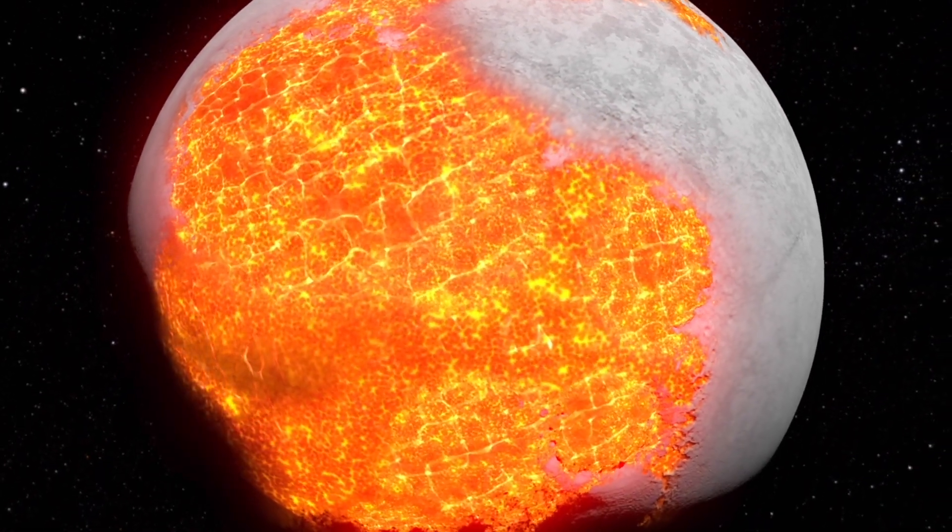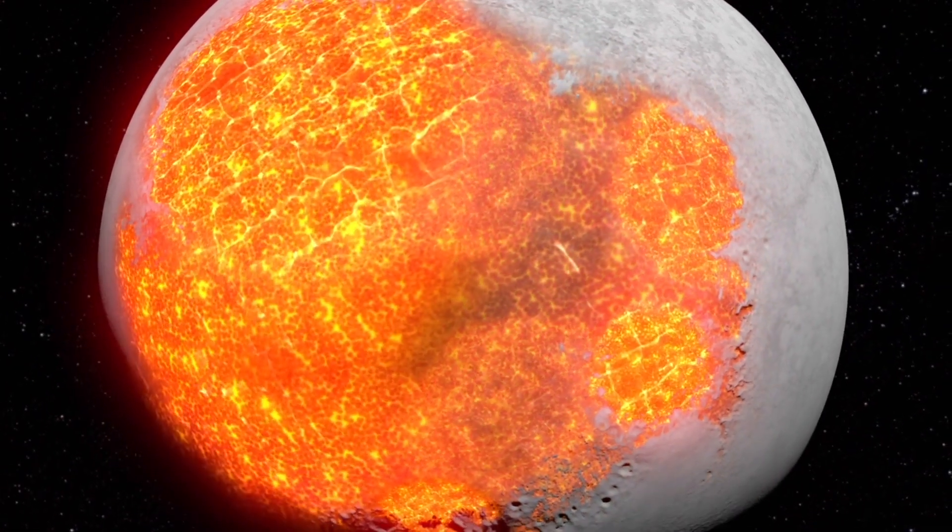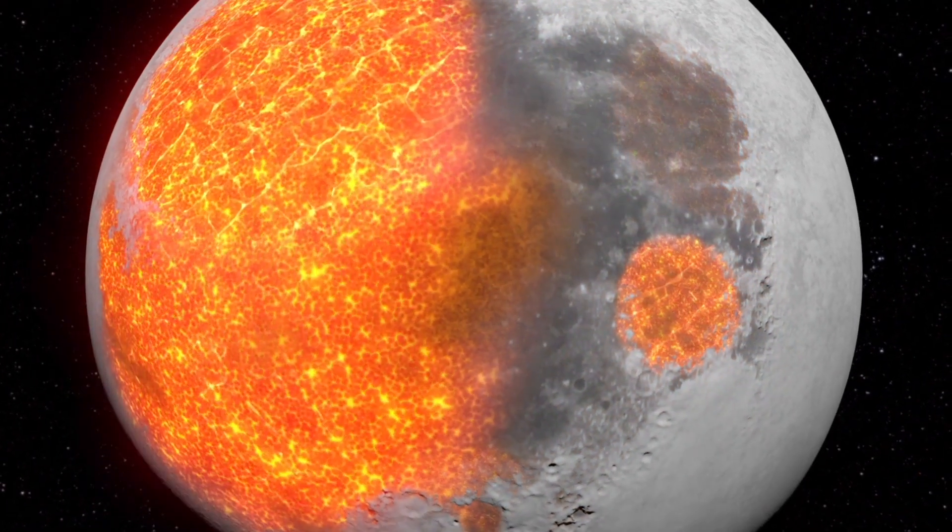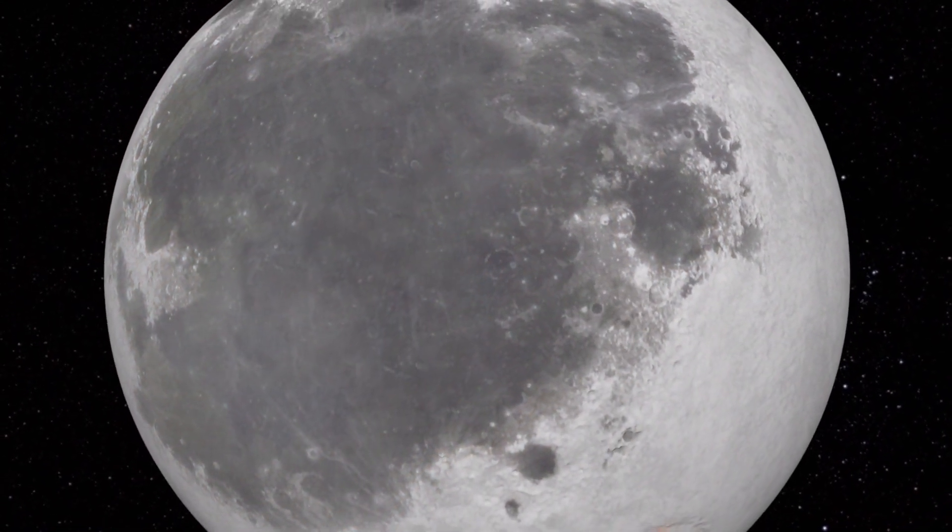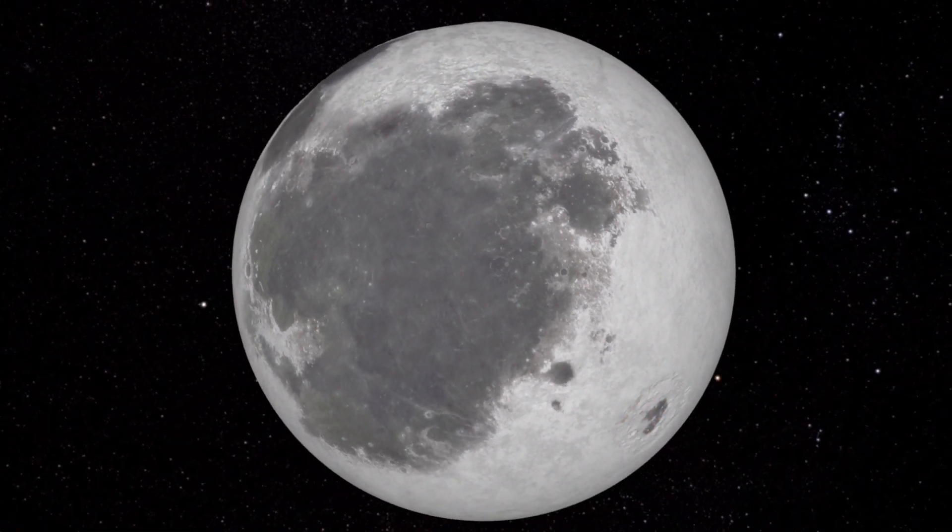That's why maria looked different from the highlands and craters. They're smoother, darker, and lower than the land around them. You won't find sharp hills or deep holes here, just wide, flat plains that stretch for miles.